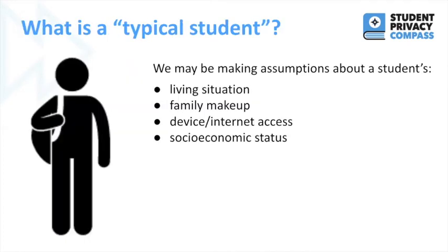Teachers and schools know a ton of information about their students — what grade they're in, their age, siblings they might have in the school, interests — but there's still a lot about students that is not known. As a result, we may end up making assumptions about them because there's often sensitive and personal information we don't know. We might subconsciously project what we think is a typical student onto their living situation, family makeup, device and internet access, socioeconomic status, and more.